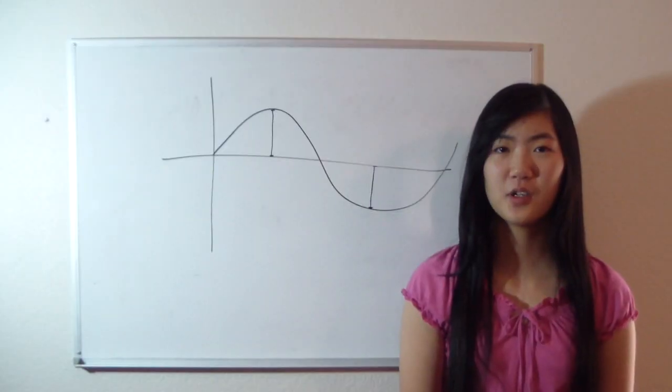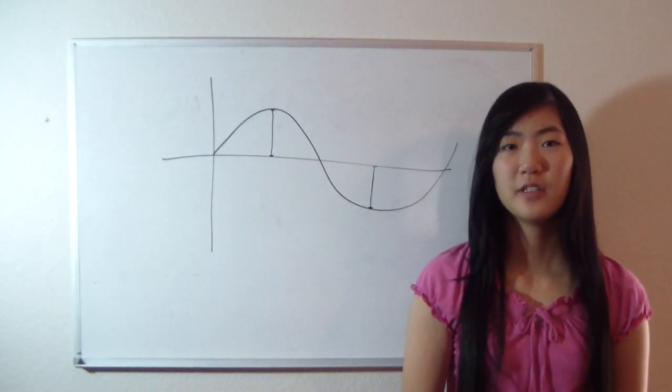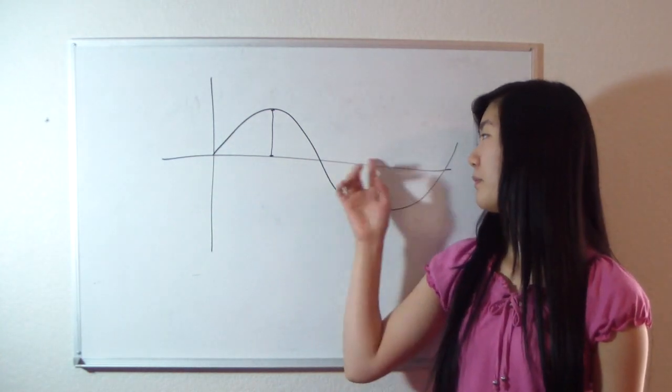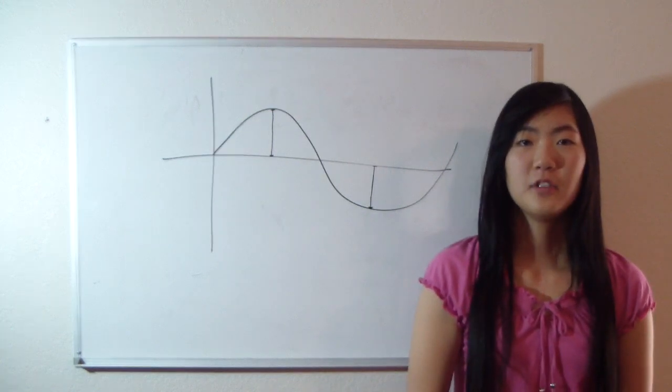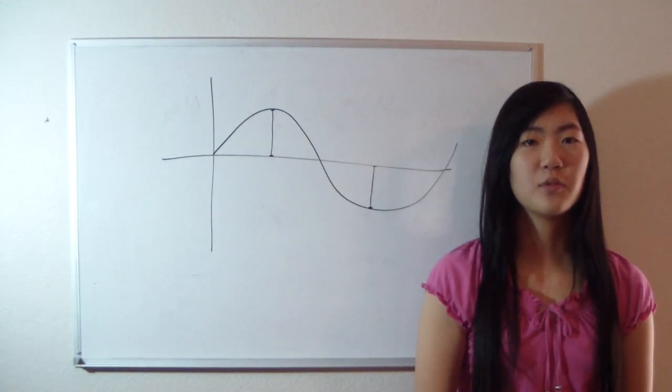Another component of sound waves is amplitude. The amplitude is the distance between equilibrium and the crest or trough of a wave. Amplitude corresponds with the loudness of the sound being produced.